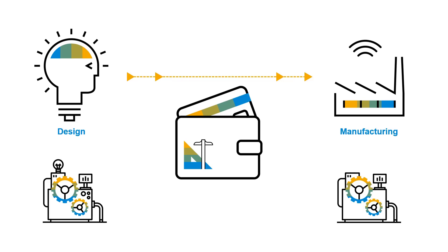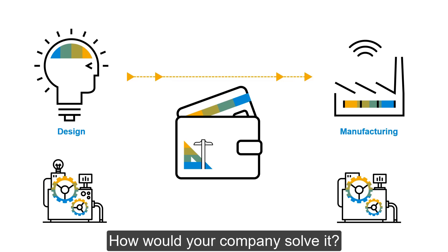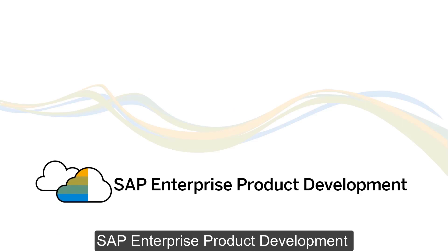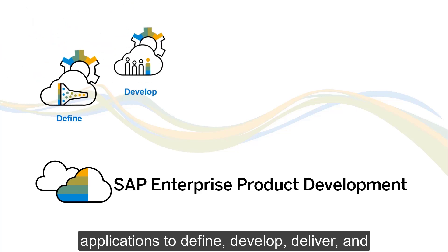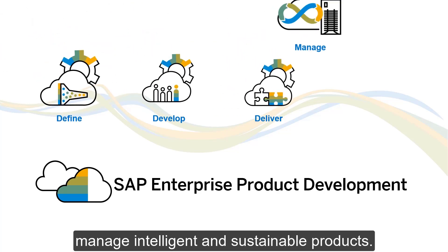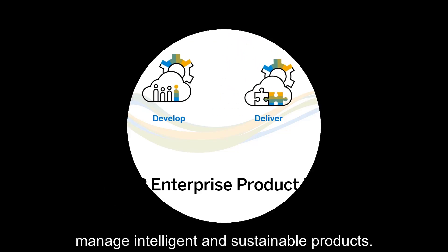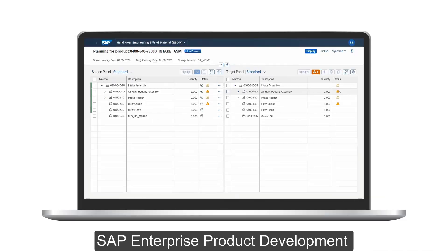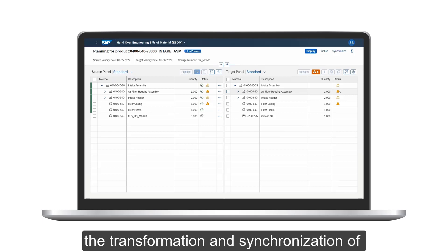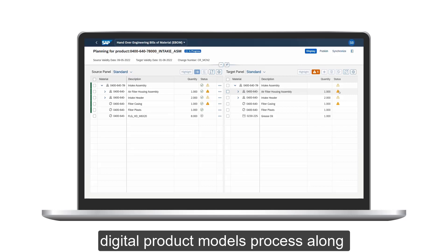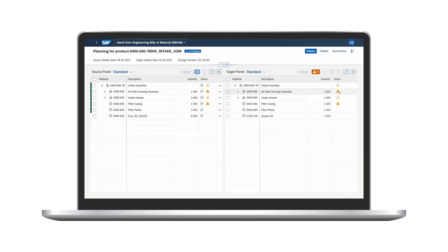How would your company solve it? SAP Enterprise Product Development provides product teams all the necessary applications to define, develop, deliver, and manage intelligent and sustainable products. Intelligent handover in SAP Enterprise Product Development empowers you to simplify and accelerate the transformation and synchronization of your digital product models process along the product or asset lifecycle.